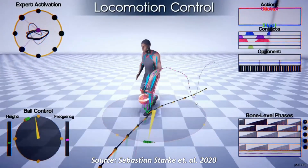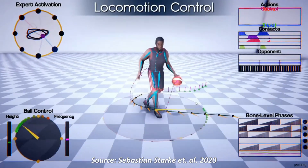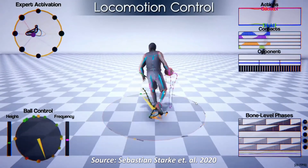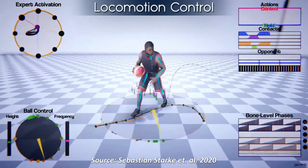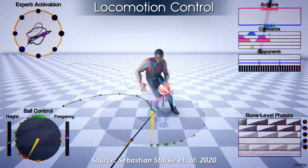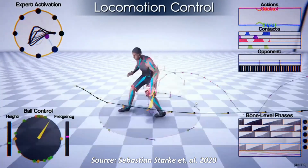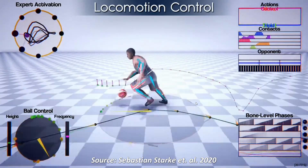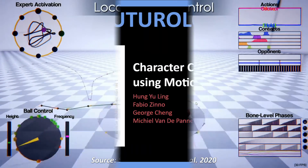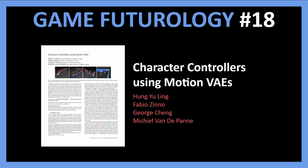Earlier in this series, we saw a paper that introduced an AI that learns how to model the motion of players so that we can generate infinitely varied but realistic motion for our virtual game characters. Today I want to share a similar paper that tries to train such a model but using a different approach.